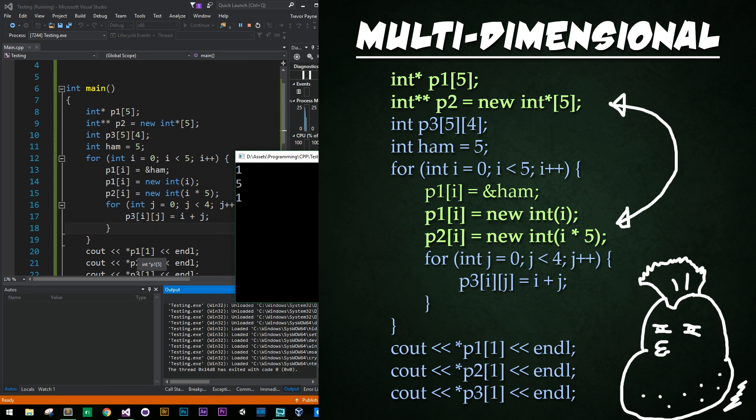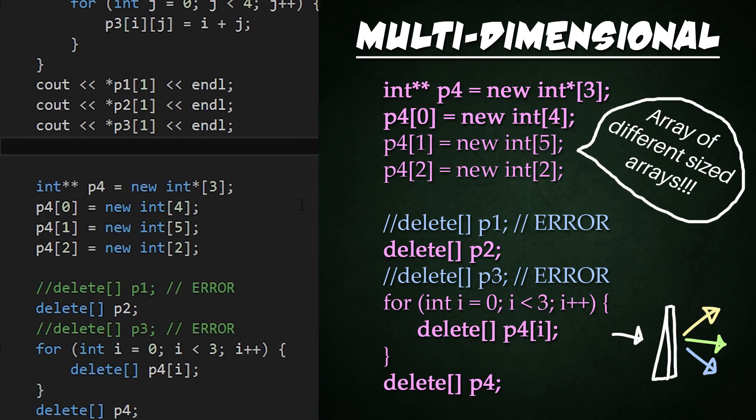All right. So value at pointer one is going to be set to a value of one. For pointer two, it's going to be set to a value of five and pointer three, which is the array of arrays is going to be set to a value of one. All right, cool.